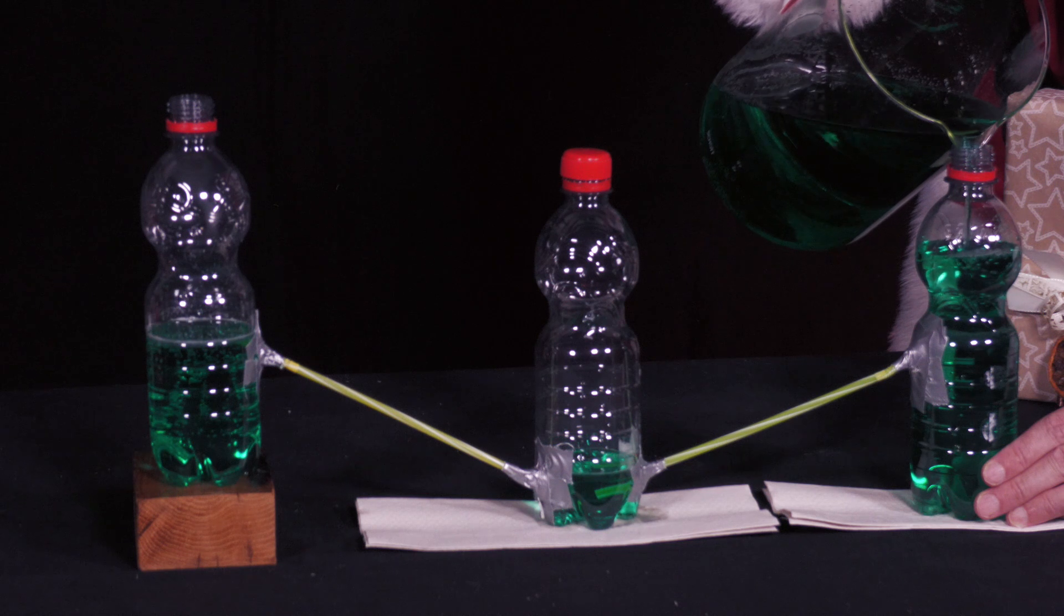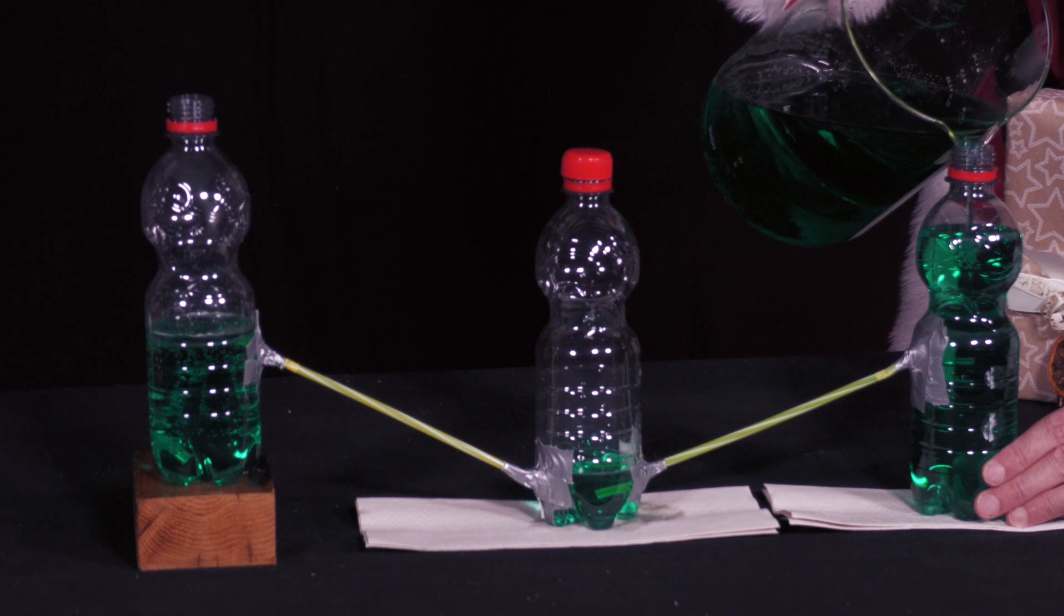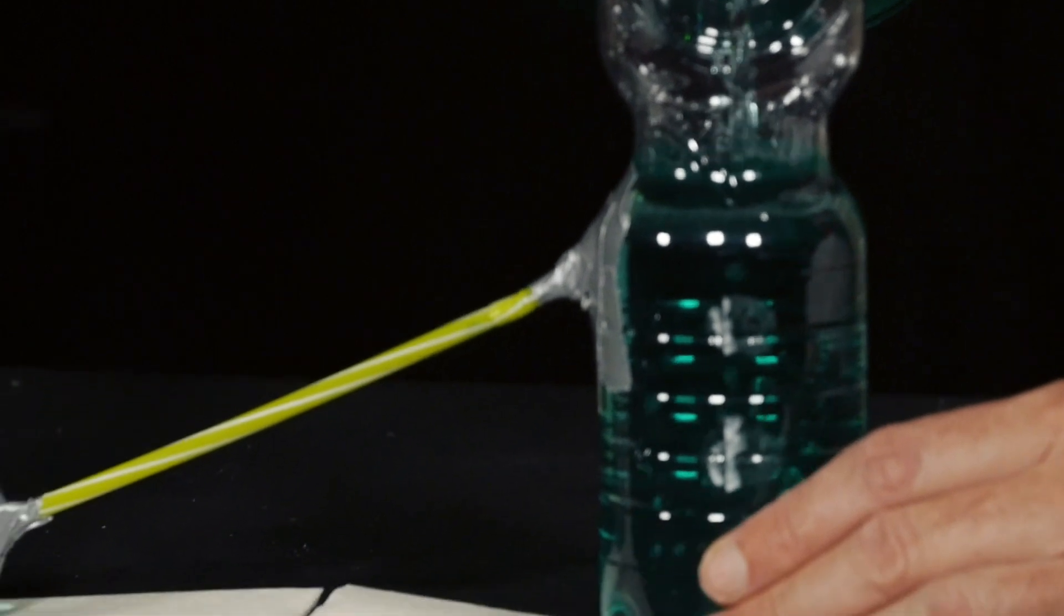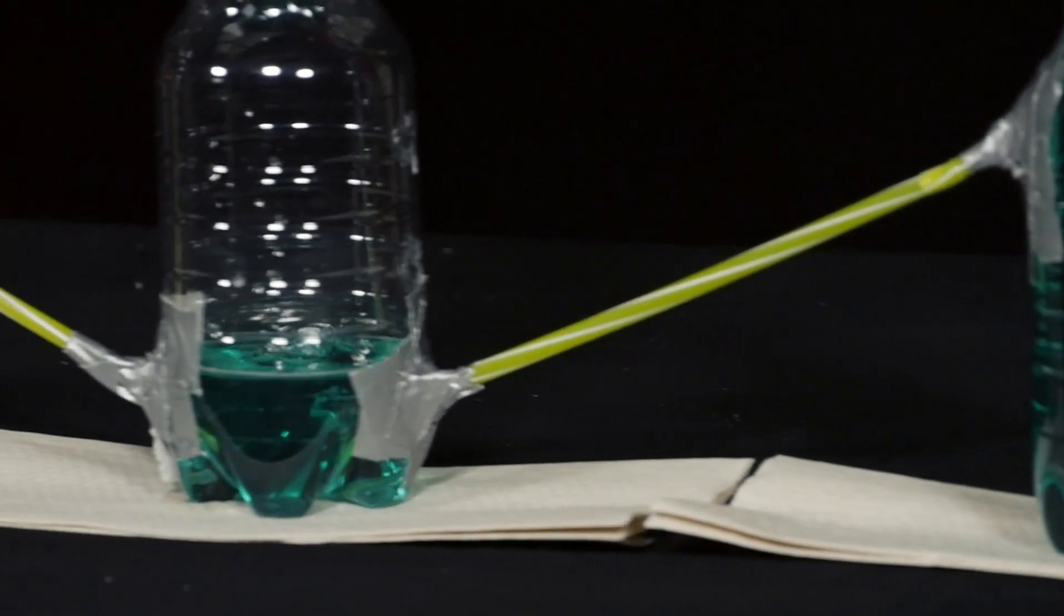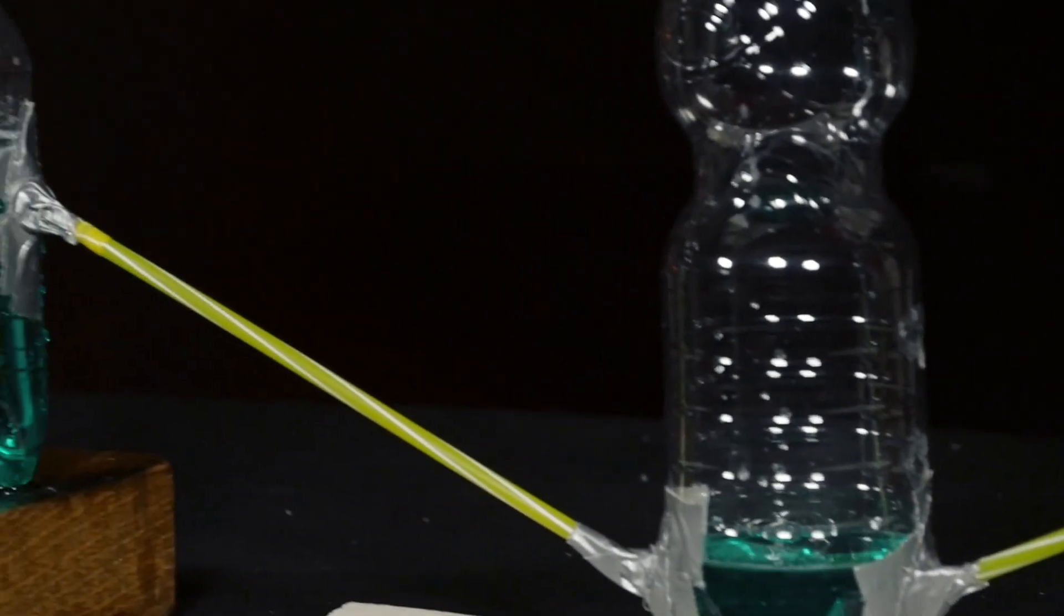If he pours water into the right bottle, water flows downhill from the right bottle into the middle bottle through the straw. This causes the water level in the middle bottle to rise.